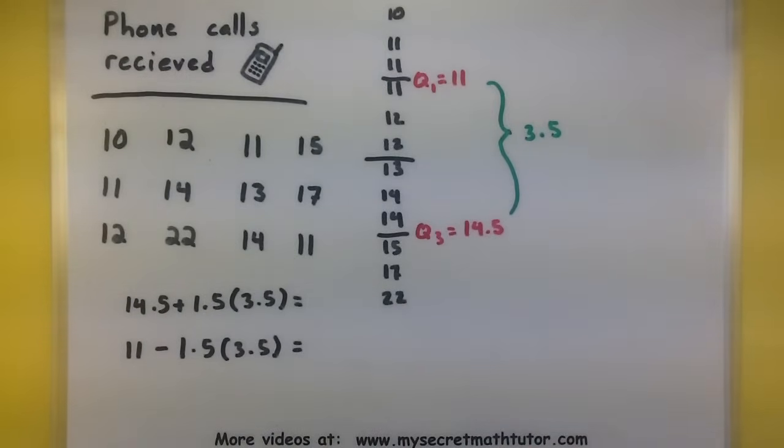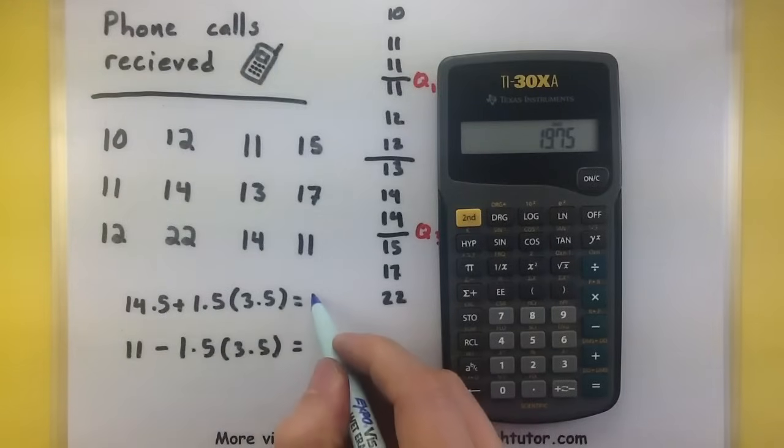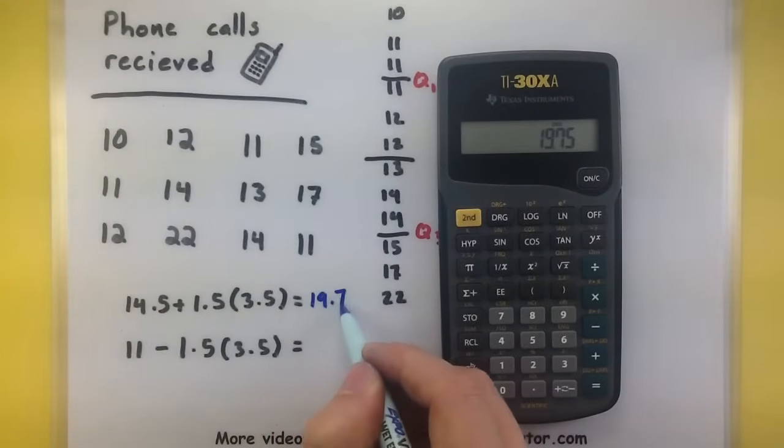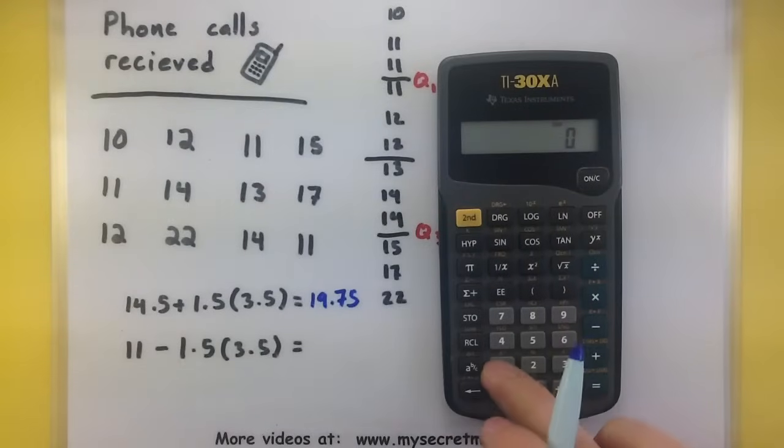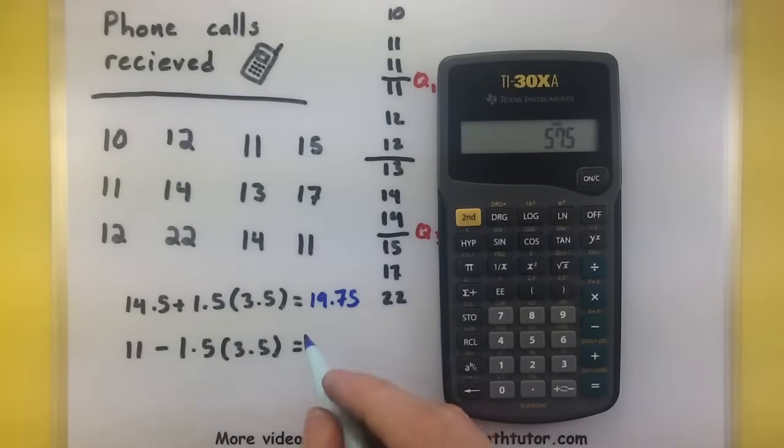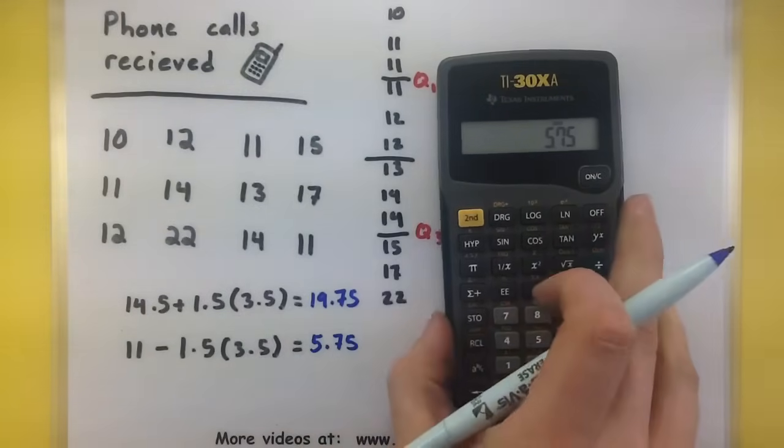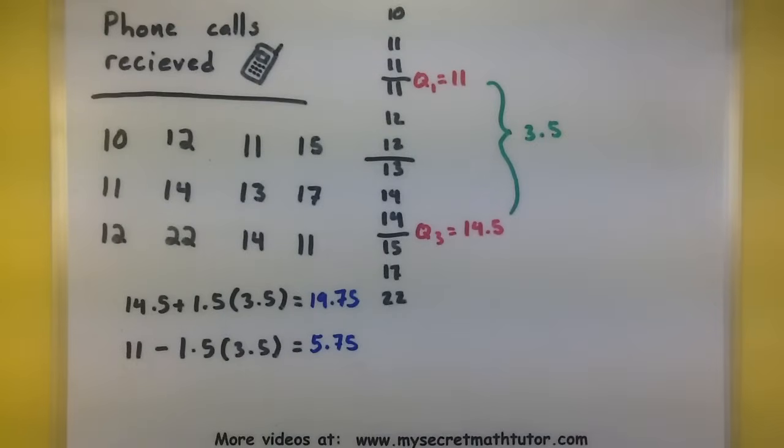Let's see what these equal. So 19.75 and 5.75. Alright, so here's how this works.